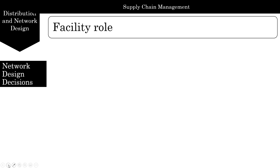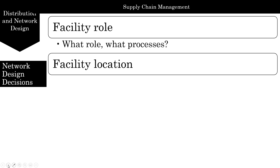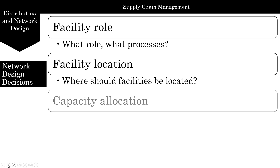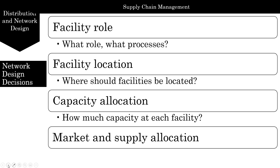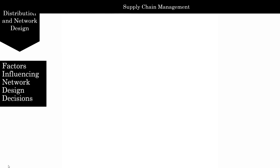Let's look at what network design decisions involve. Supply chain network design decisions include: assignment of facility role — what role should each facility play and what processes are performed at each facility. We also look at location — where these facilities should be located, how much capacity should be allocated to each facility, what markets each facility should serve, and which supply sources should feed which facility.